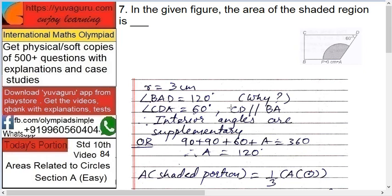These angles are 90 degrees. So since the lines are parallel, angle CDA equals 60, therefore angle BAD equals 120. Interior angles are supplementary.